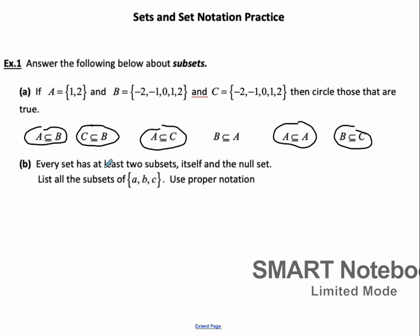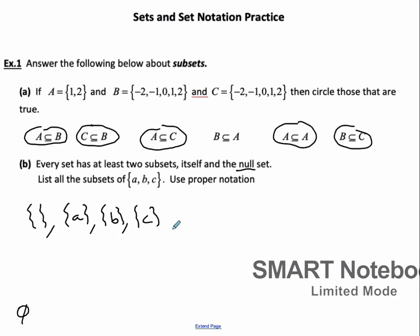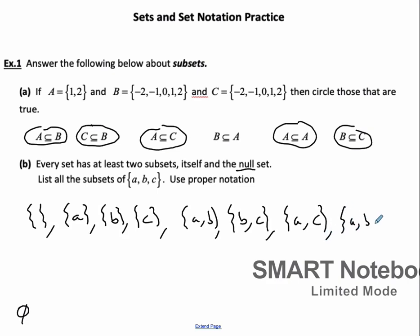So let's look at part B. Every set has at least 2 subsets — itself and a null set. List all the possible subsets of A, B, C. The null set is always included, so that's the set with no elements, and you can also use this symbol. Then the subsets are: just A, just B, just C, then AB, BC, AC, or ABC. So there are 8 subsets in total.